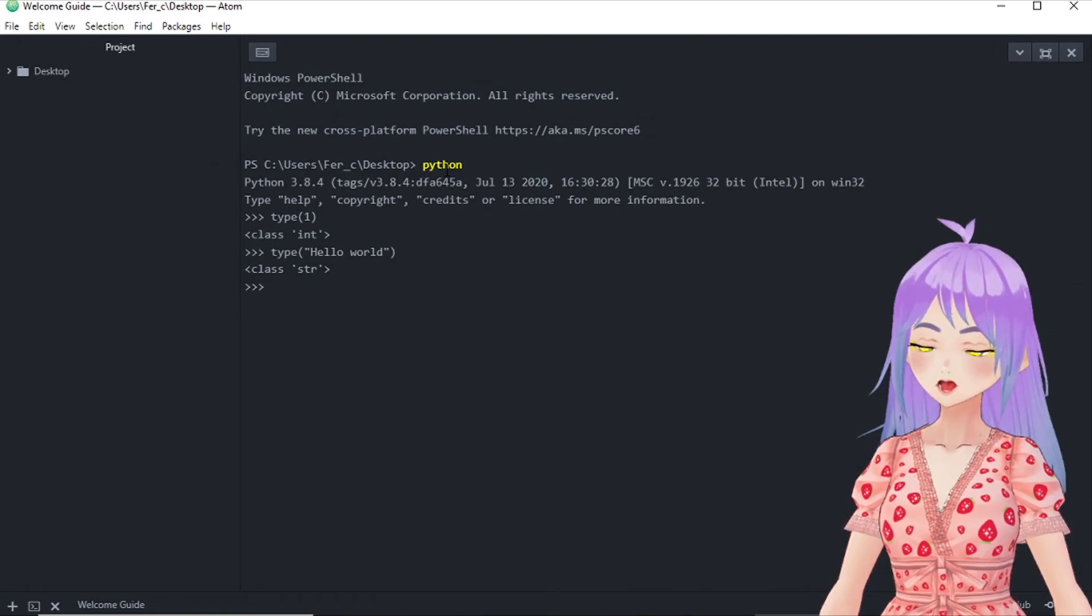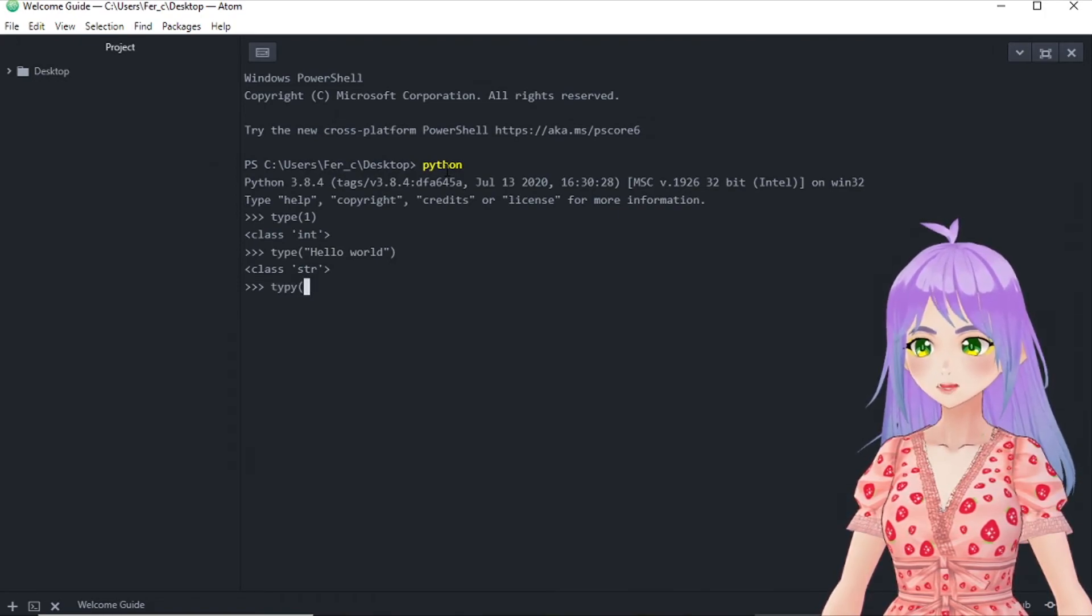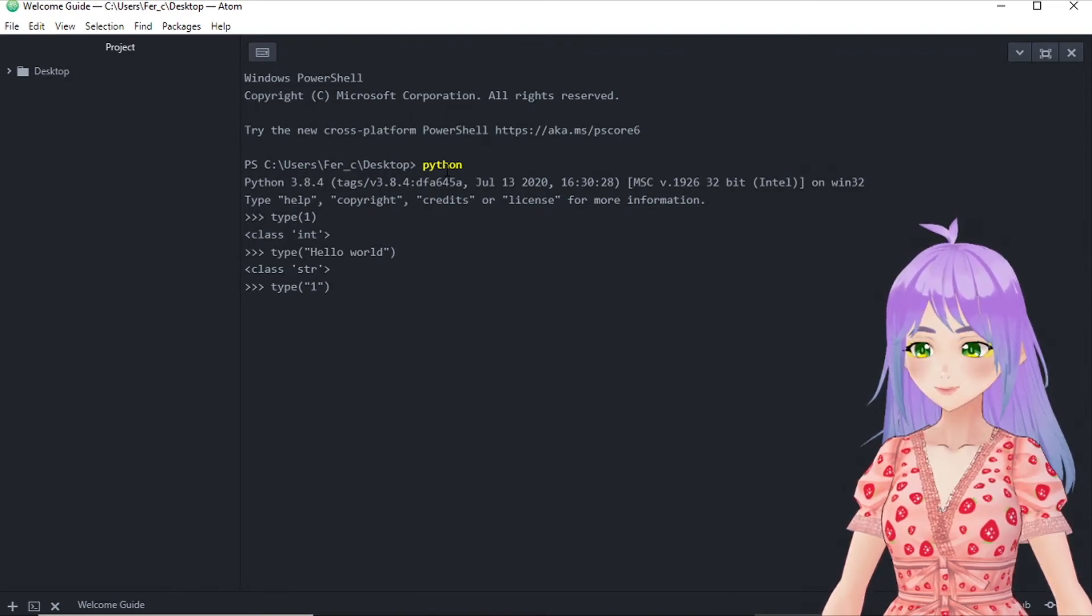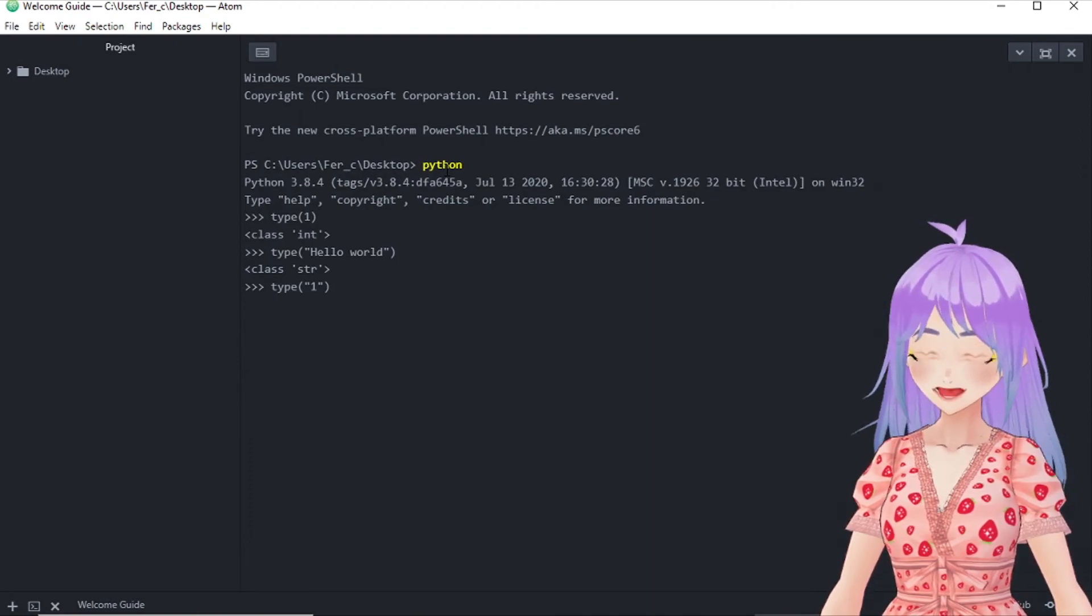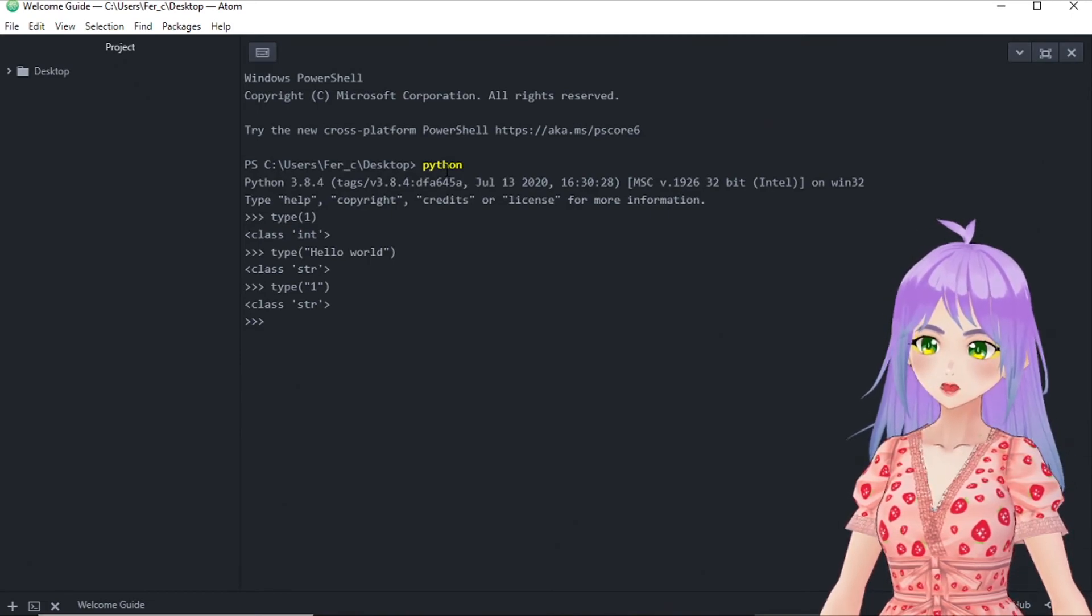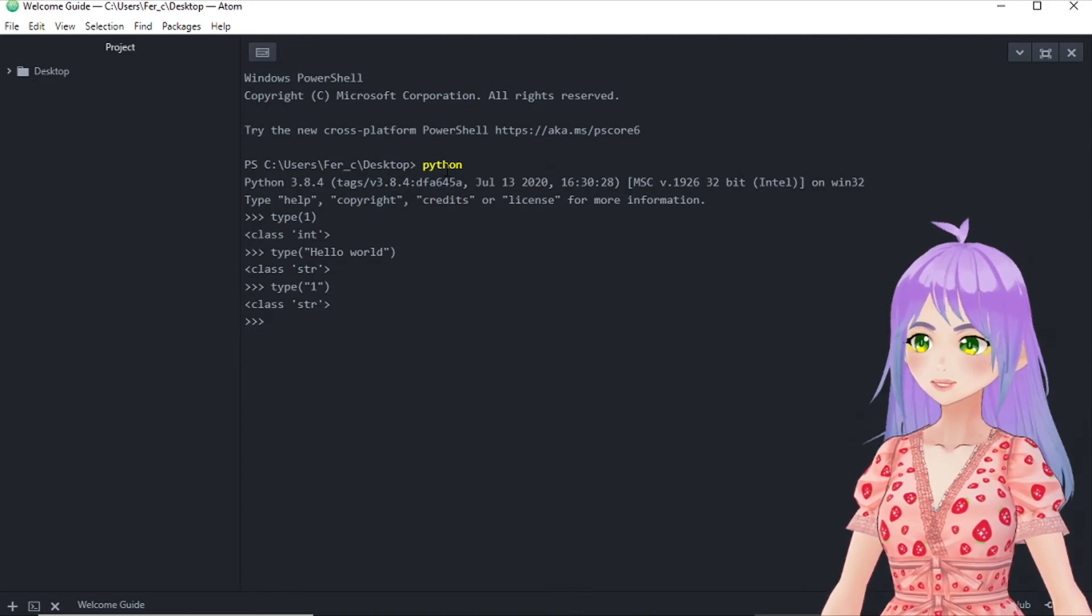So what do you think if I just do this? If I write type, parenthesis, quotation marks, 1 and close parenthesis. What do you think the type of this data is going to be? So write in the comments if you're right or wrong after seeing this. So let's press enter. And the class is a string, it's a text. And remember, all the characters that you put in quotation marks is always going to be considered as a text in Python.